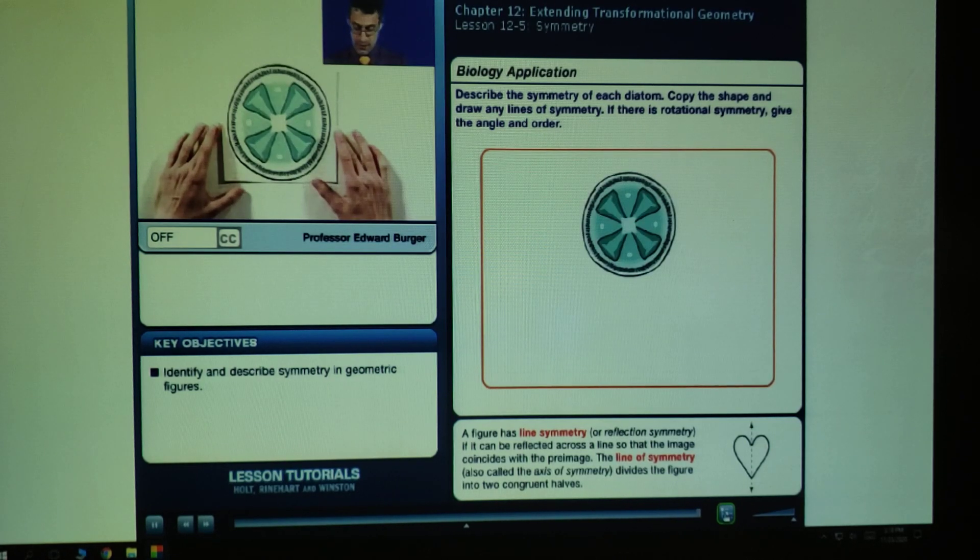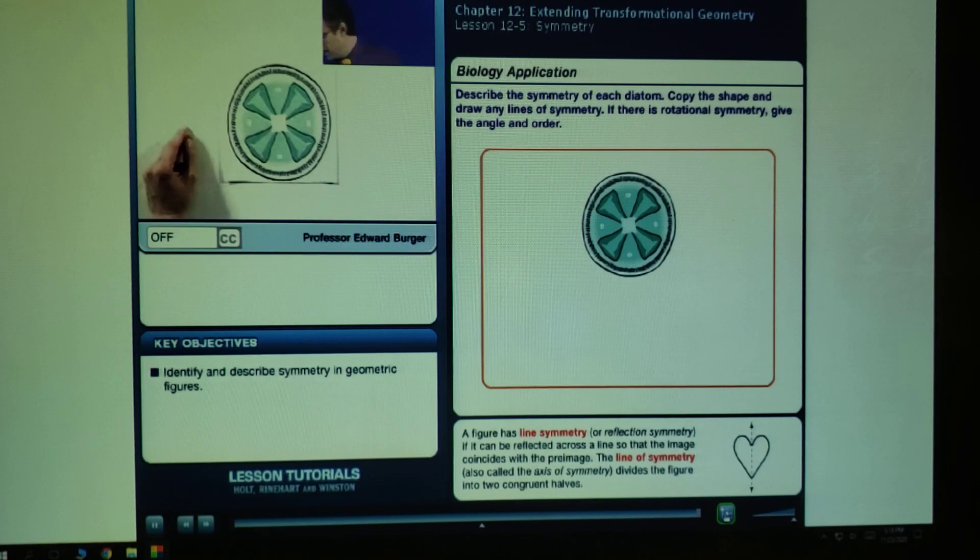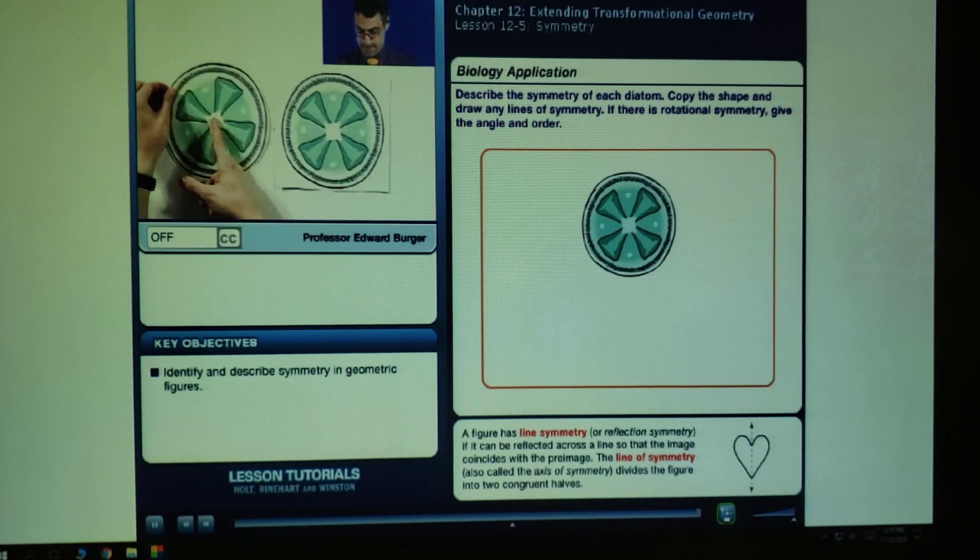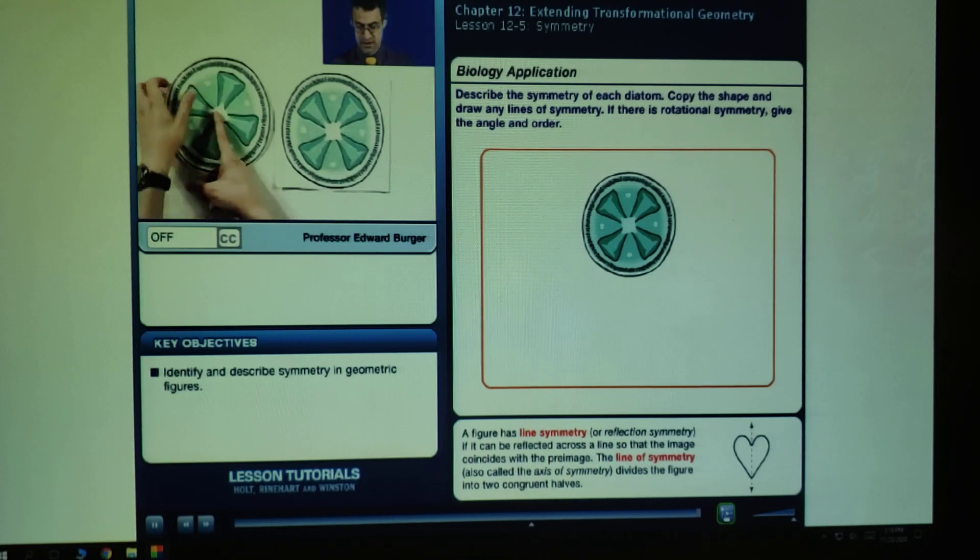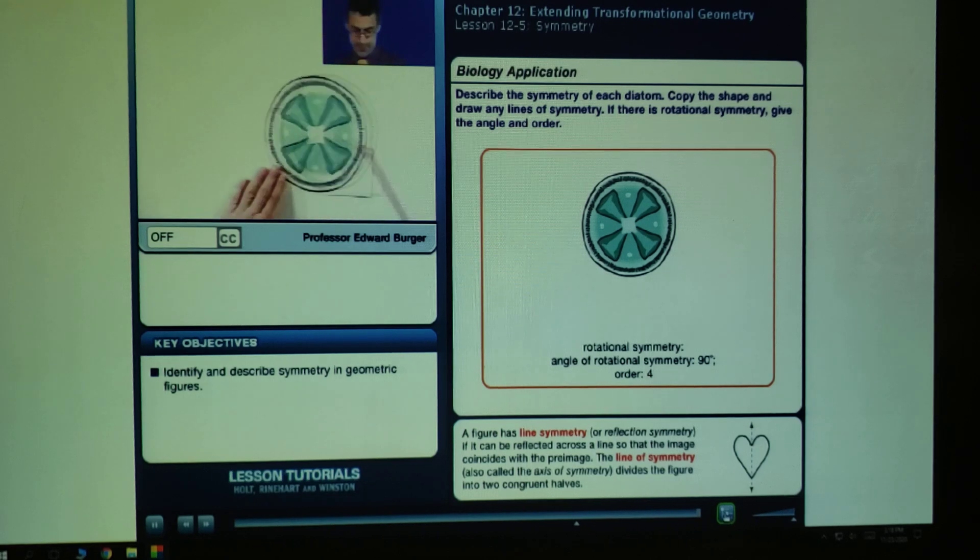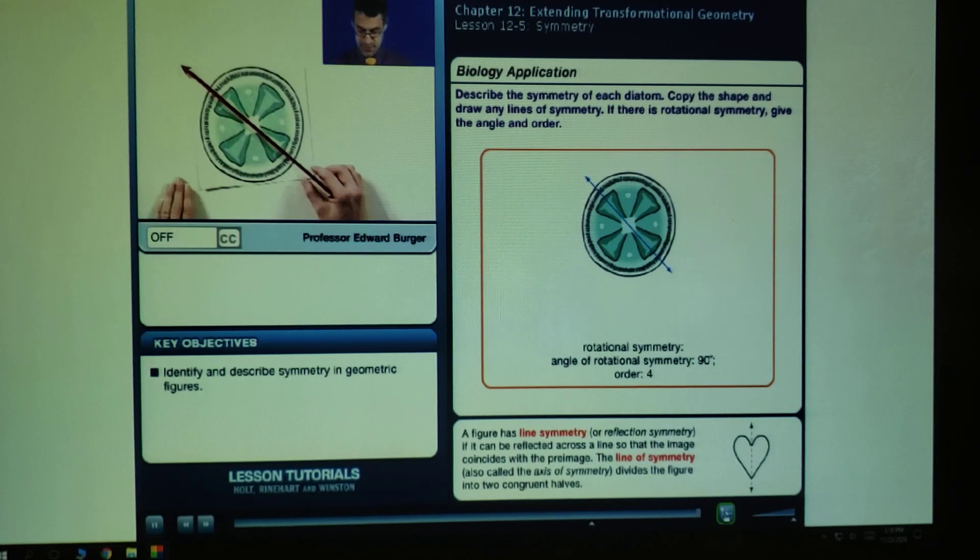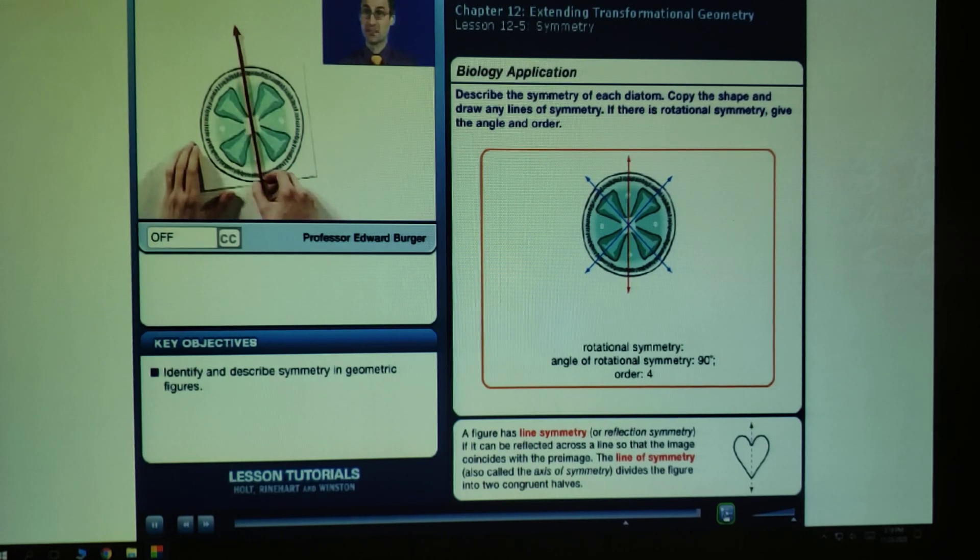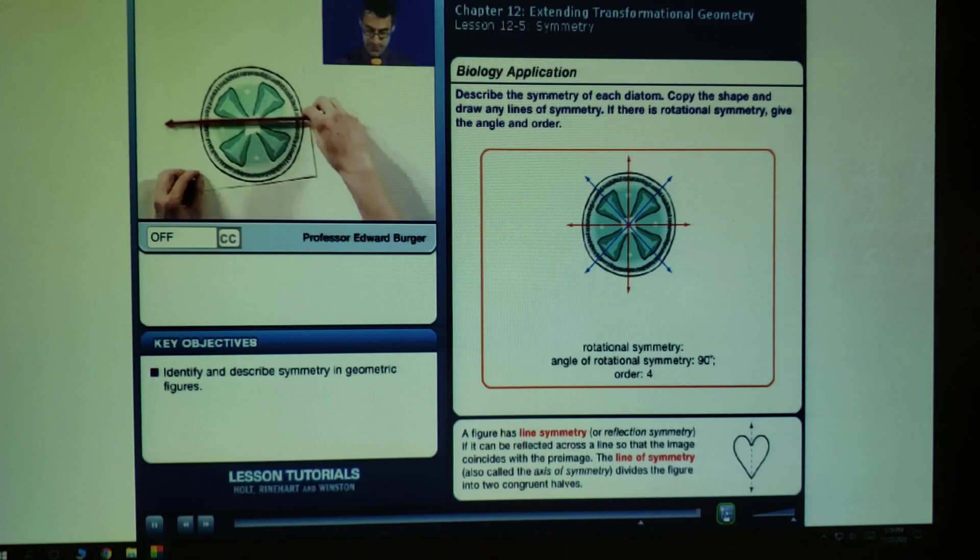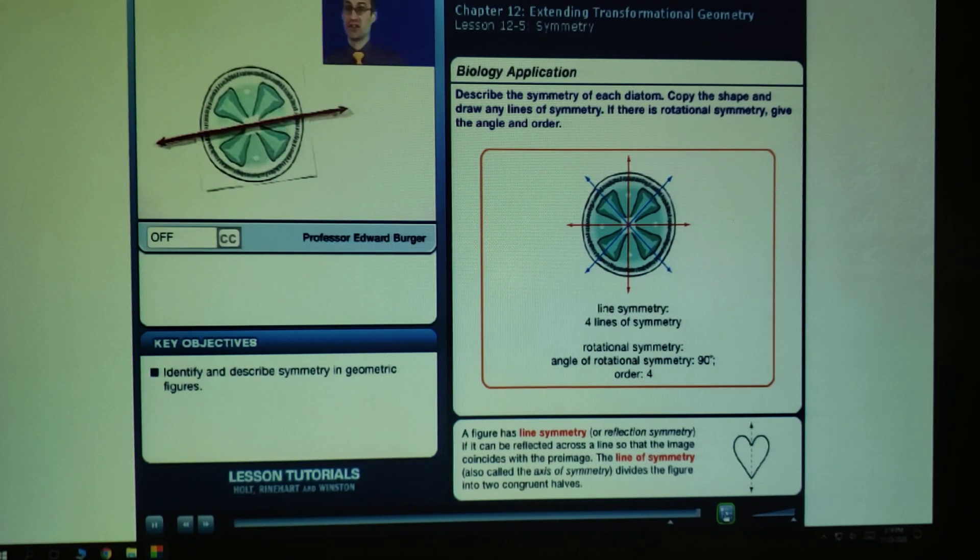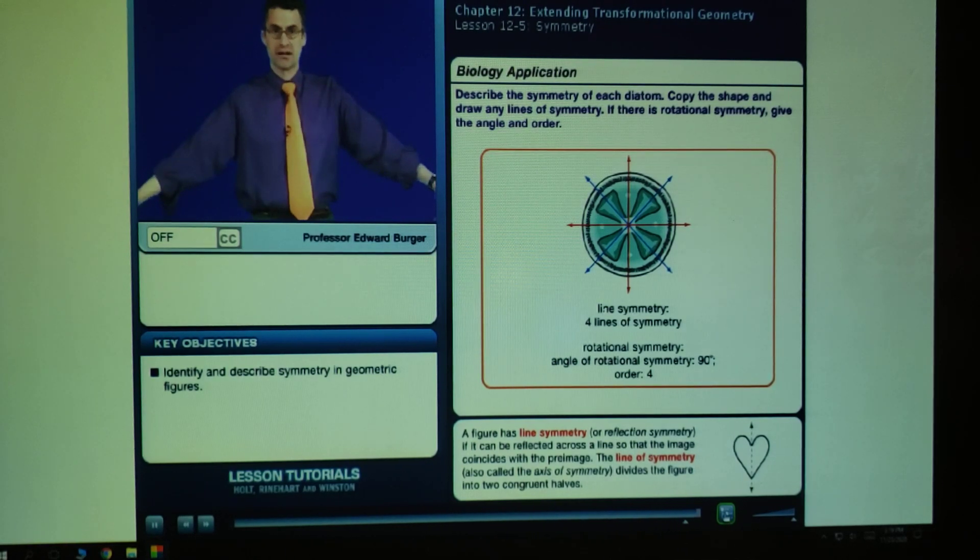How about this one? Lots of symmetry going on here. First of all, there's rotational symmetry. Because if I were to rotate 90 degrees, I'd get the same thing. Rotate 90 degrees, 90 degrees, 90 degrees. This has rotational symmetry of 90 degrees, order would be four. But there's also lines of symmetry here. If I reflect around here, it's symmetric. Reflect around here, it's symmetric. Even reflect around here, it's symmetric. There are lots of lines of symmetry here. So I see one, two, three, four lines of symmetry, and we also see that there's rotational symmetry. So this is a very, very symmetric piece of nature.